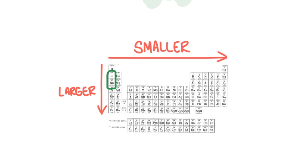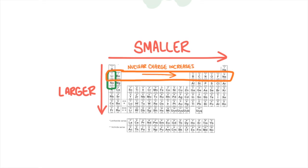In general, atoms get smaller as you move from left to right across a period. Take period number two — each element has the same number of occupied energy levels, but the charge in the nucleus increases because one proton is added as we move from element to element across the periodic table. The greater the charge of the nucleus, the greater the pull on those energy levels, and they get pulled in closer and closer. So a neon atom is smaller than a carbon atom.